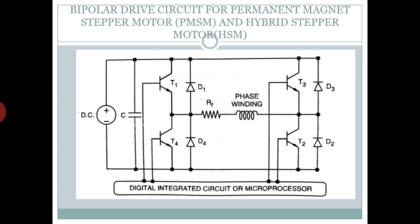Moving on to the bipolar drive circuit for permanent magnet stepper motor and hybrid stepper motor — a simple bipolar drive circuit for one phase winding is shown in the figure. The torque produced by the permanent magnet and hybrid stepper motor is directly proportional to the current, so the direction of current flow is very important for determining the direction of torque — clockwise or counterclockwise. The current direction in the phase winding is controlled by switching T1 and T2 simultaneously, then T3 and T4 simultaneously, controlled by a digital integrated circuit or microprocessor. A high value forcing resistance Rf is provided in series with the phase winding to minimize switching time.